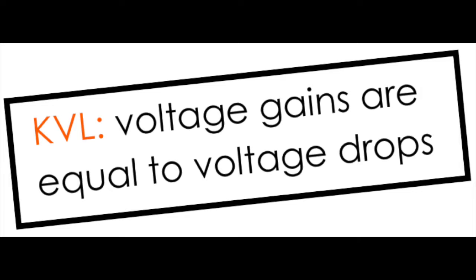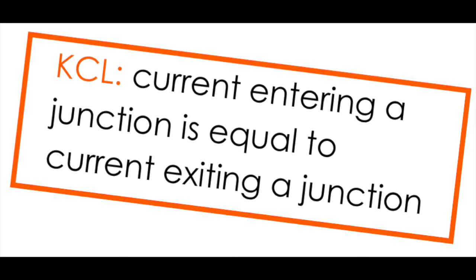Just a quick recap: Kirchhoff's voltage law tells us that the voltage gains in a circuit are equal to the voltage drops. Kirchhoff's current law says that current entering a junction is equal to the current exiting a junction in a circuit.